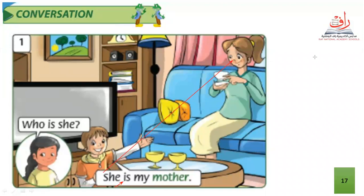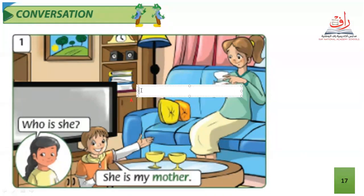Every time when I want to write the answer, we should start the answer with the subject pronoun — let's see what we have here — with the subject pronoun 'she', then 'is'. Don't forget that. Every time when we are going to start writing the answer, we should start with 'she' or 'he' or 'it', followed by 'is'.